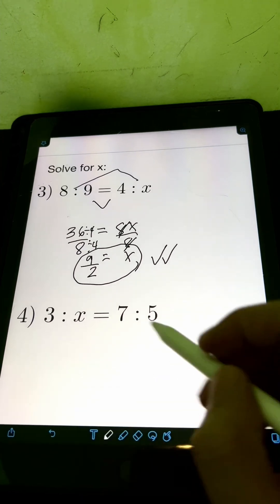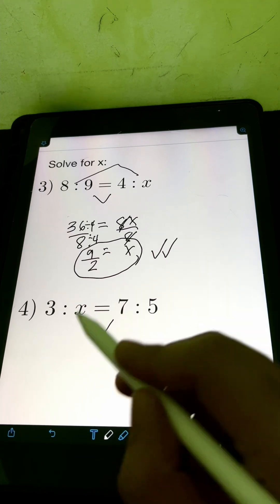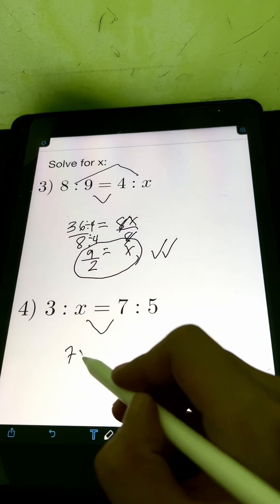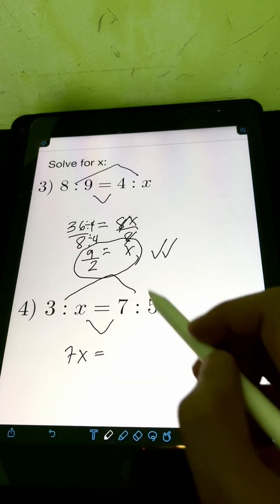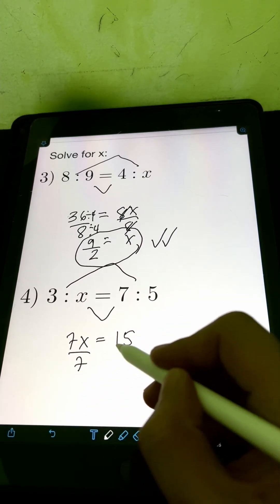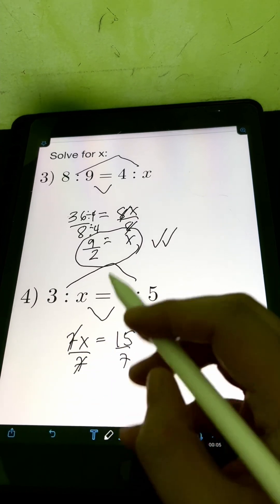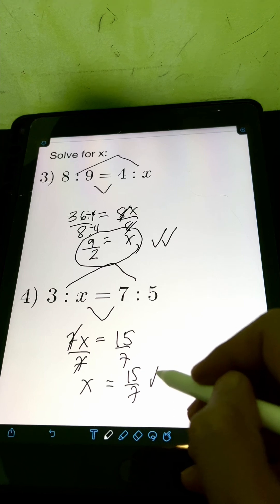For number 4, we have 3 is to x is equal to 7 is to 5. Again, let's multiply the means, 7 times x or 7x. Equate it to the product of the extremes, 3 times 5, that's 15. Then we can divide both sides by 7. So cancelling out 7, x is equal to 15 over 7.